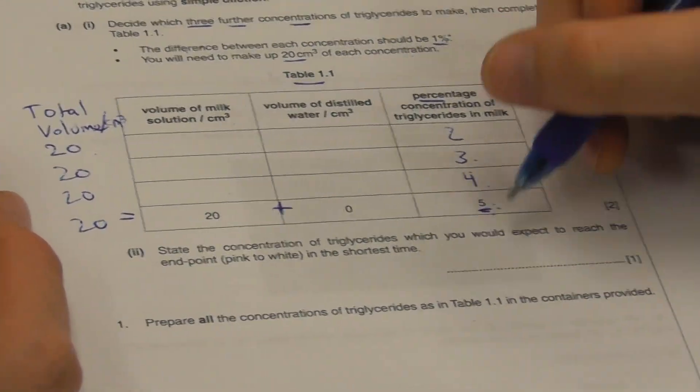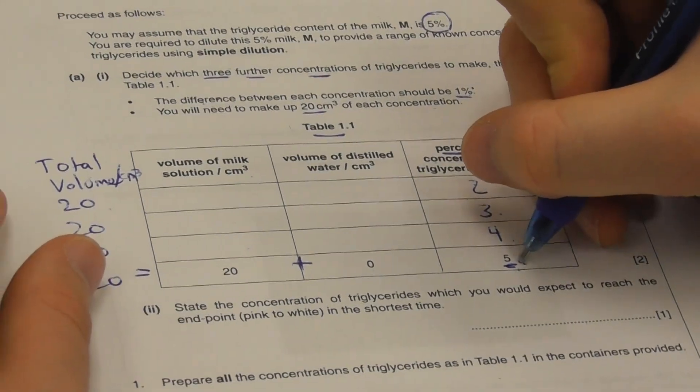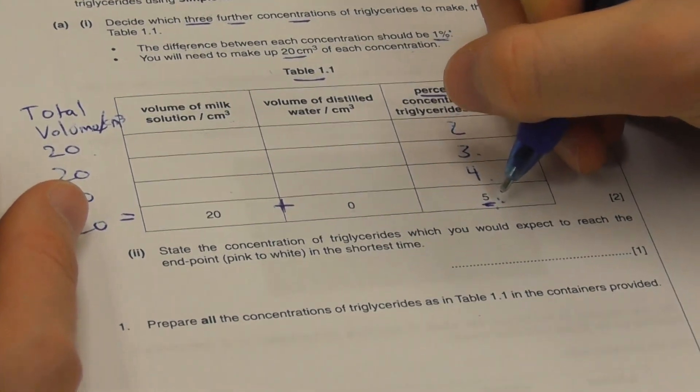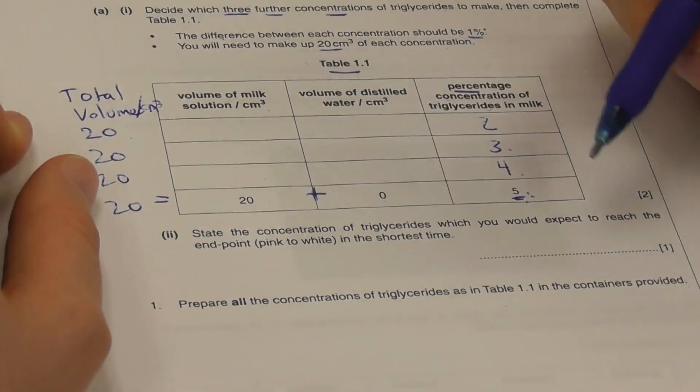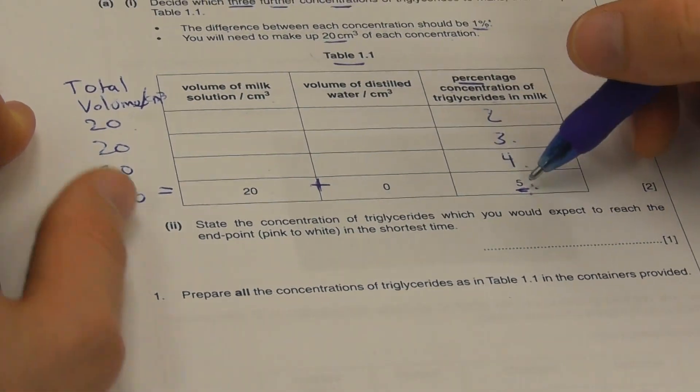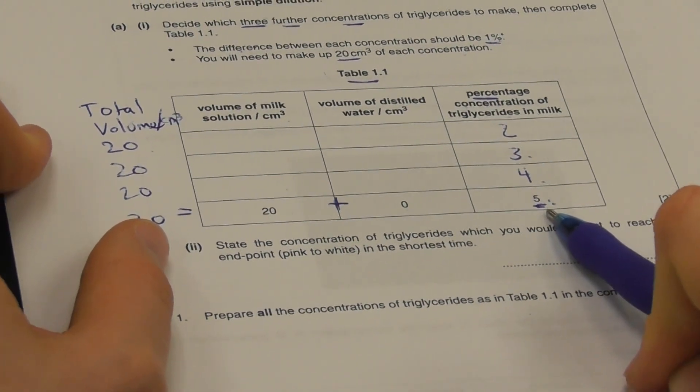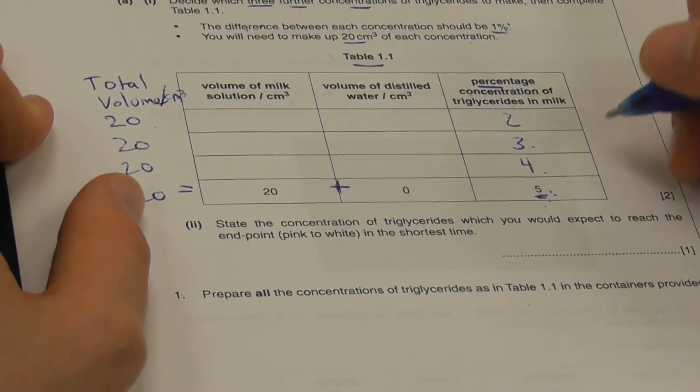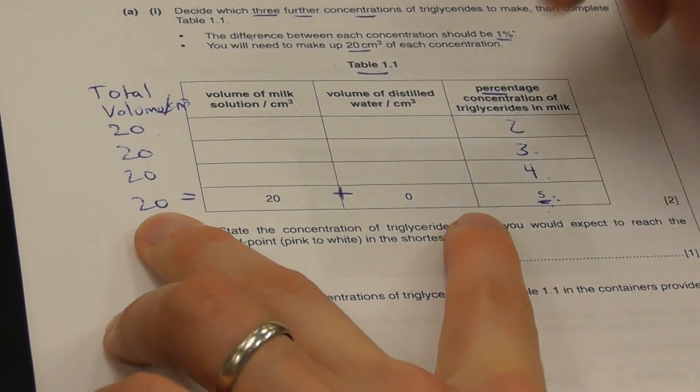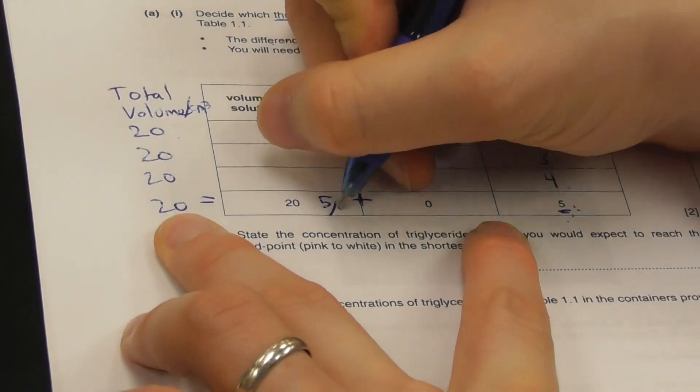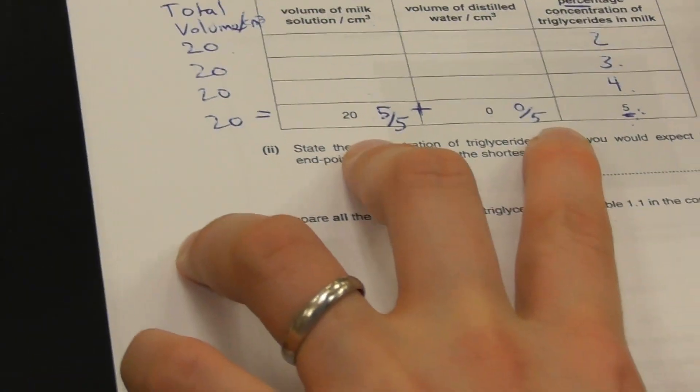Effectively what's going on here is we have 5 parts for each of our 20 cubic centimeters. For each of our 20 cubic centimeters of total volume, we have 5 parts. That means of our total volume of 20, 5 of those parts are milk. And 0 of those parts are water.